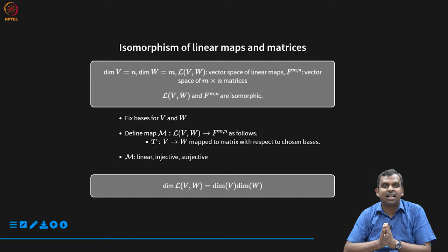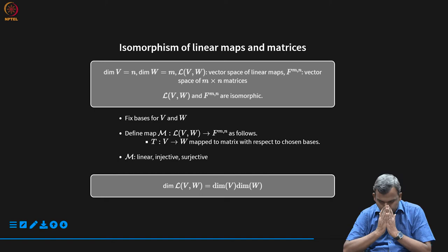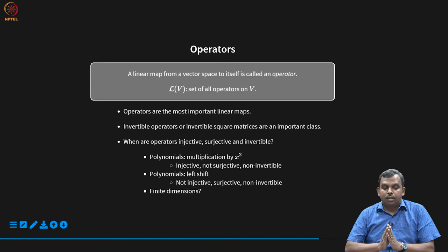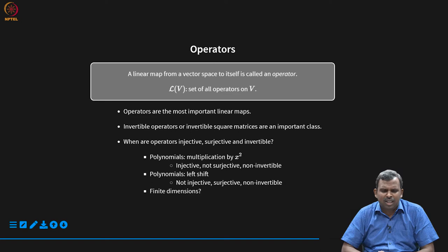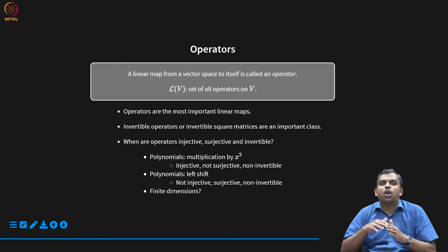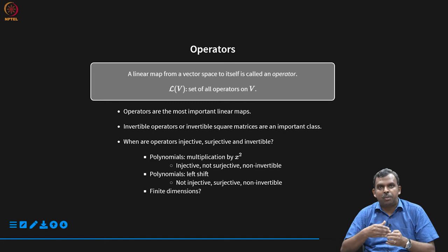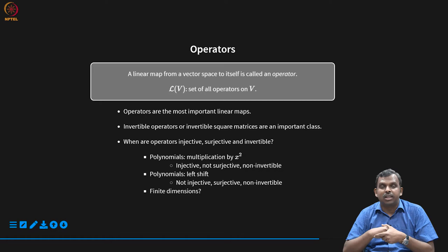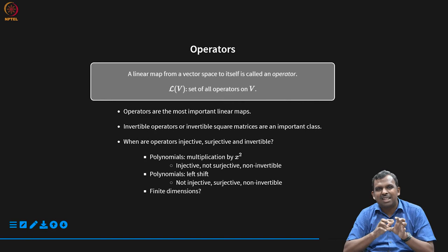Even under multiplication, linear maps and matrices are the same structurally — composition is also preserved by matrix multiplication. The next topic is defining operators. A linear map from a vector space to itself is called an operator. It is given a special name and is especially significant. Most of the linear maps we study will be operators — they work from vector space to itself, with input and output in the same vector space. The set of all operators is L(V, V), which can be shortened to L(V).